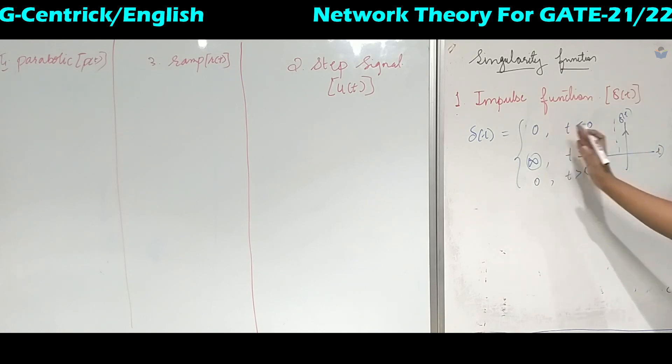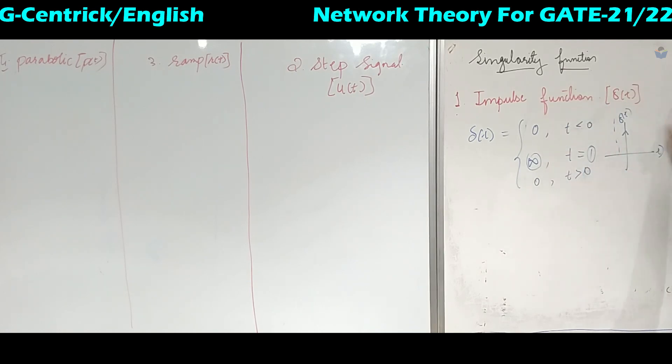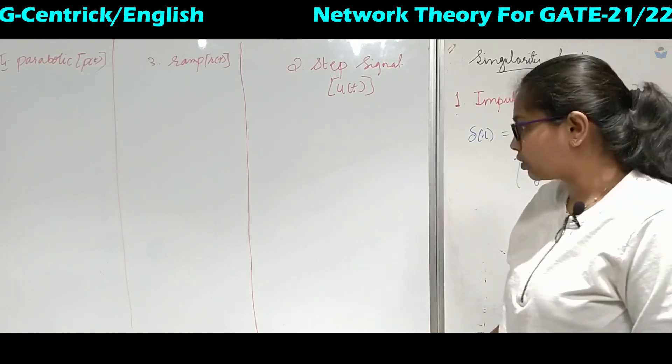The area bounded by the impulse is infinite. The magnitude can be anything varying from 1 to infinite. This is the graphical representation — for t less than 0 it is 0, and for t greater than 0 it is also 0.